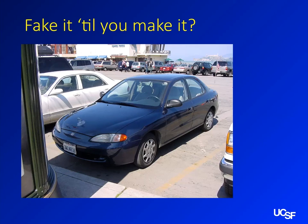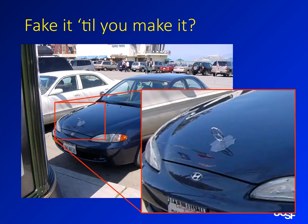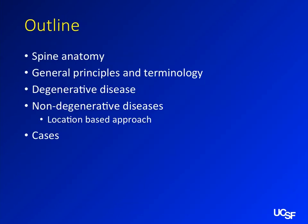One of my favorite pictures was taken in front of Alcatraz — it's a Hyundai with a Mercedes-Benz hood ornament duct-taped to the front. I think that's one of the funniest things I've ever seen. So we'll talk about spine anatomy, general principles and terminology of spine imaging, cover degenerative disease, and an approach to non-degenerative disease. If time allows we'll do some cases at the end.